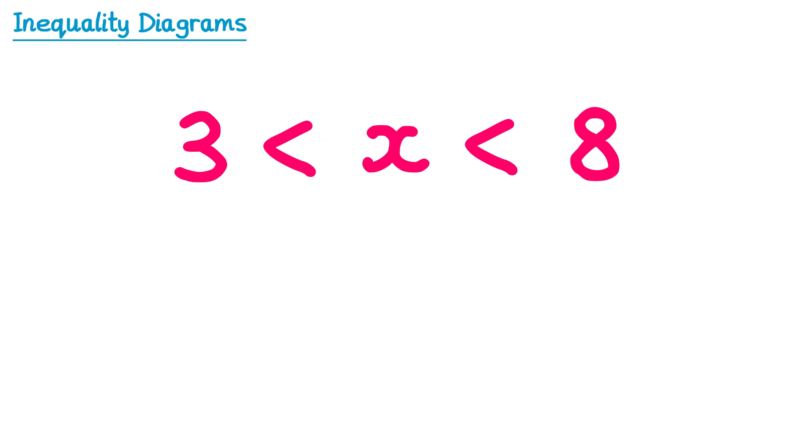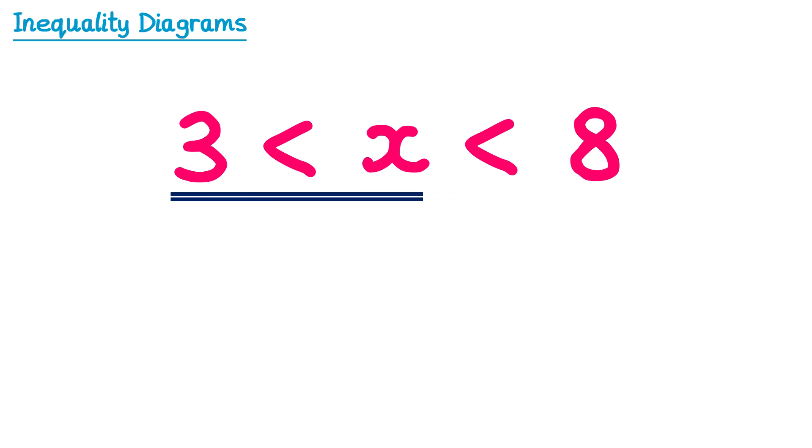Sometimes you get inequalities that have two symbols, like this one here. You could read this one in two parts. On the right-hand side, it says that x is less than 8, so we want numbers that are less than 8. But on the left side, it says 3 is less than x, so 3 must be less than any of the numbers that we use for x. You could think of this the other way around: x is greater than 3.